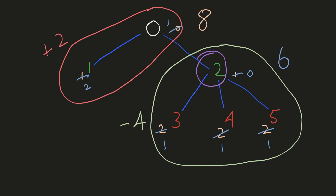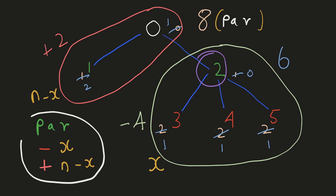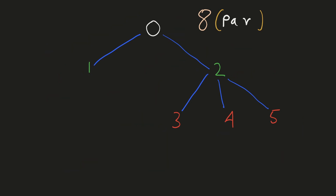We can come up with a general formula. If we consider node 0 to be the parent and node 2 to be its child, let x represent the number of nodes in the subtree of node 2, which is away from the parent. Since we have n nodes in total, the number of elements in the other group would be n minus x. The general formula can be written as the result of the parent minus the number of nodes in the subtree of the child — this part represents the group which is closer to our child — plus the number of elements in the group which has gone further away from the child.